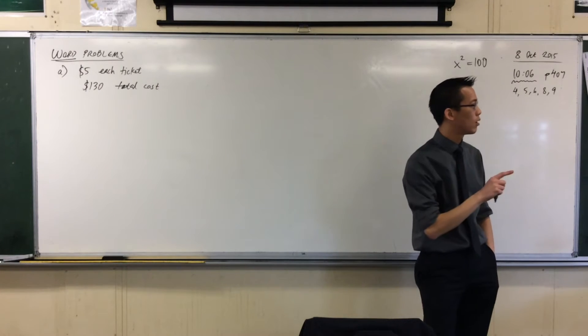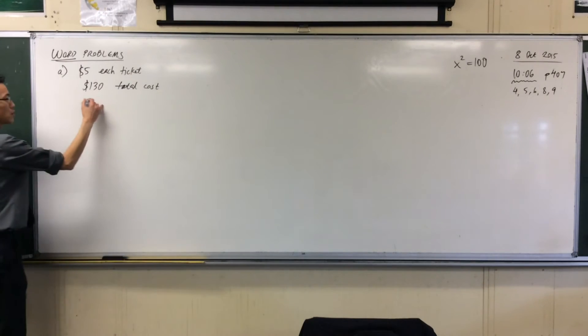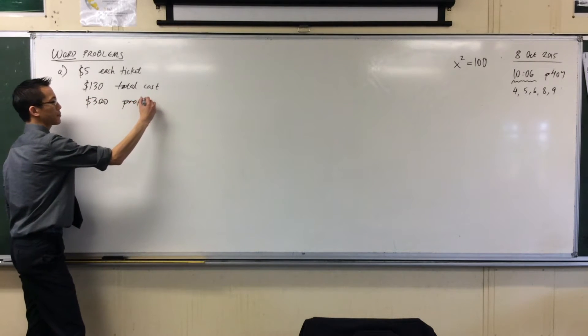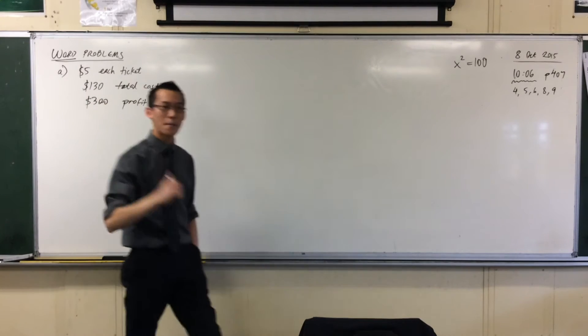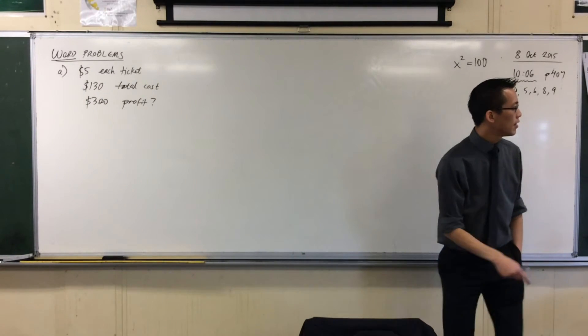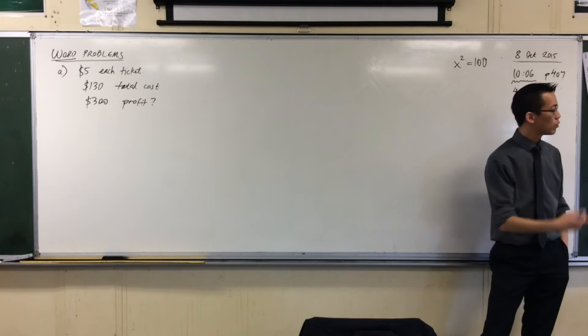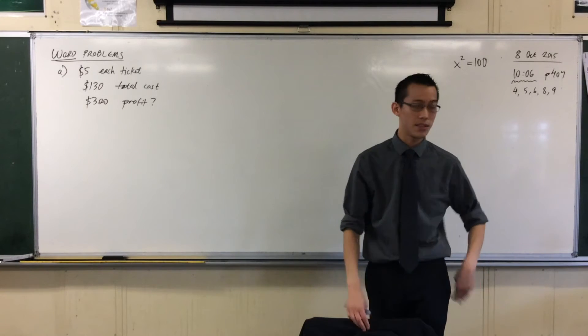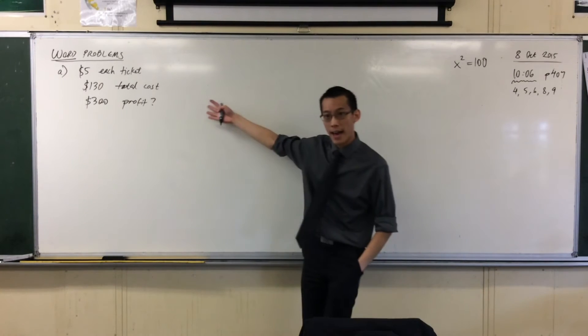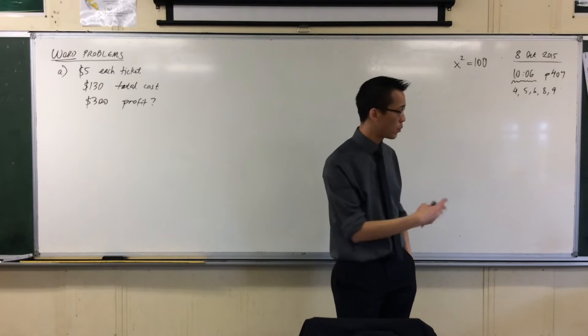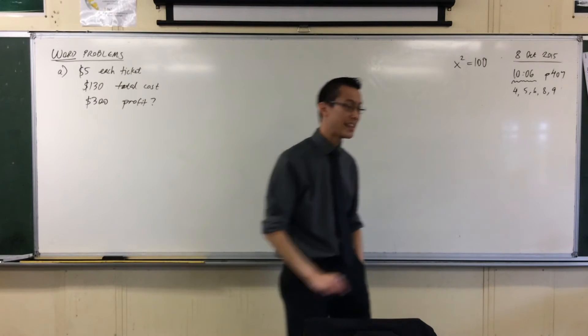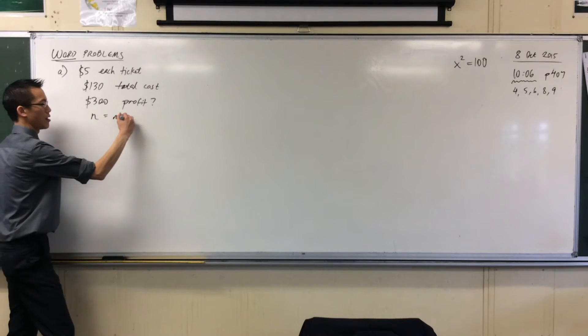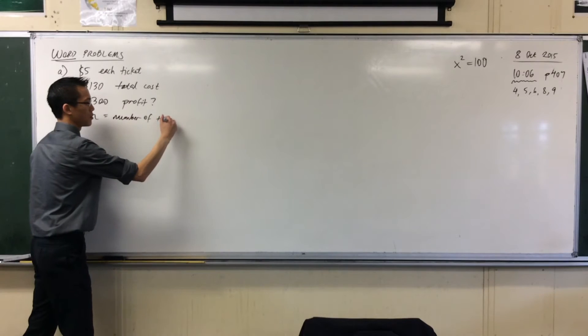How many tickets must be sold to make a profit of $300? So I'm going to write $300, then I'm going to write profit and question mark, because that's what I'm aiming at. That's my target. Then they give you a bit of a hand. Let N stand for the number of tickets sold. So N equals number of tickets sold.